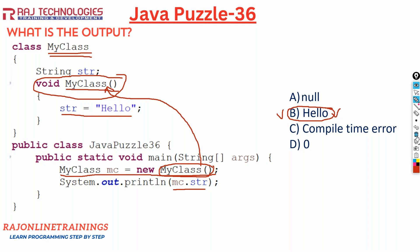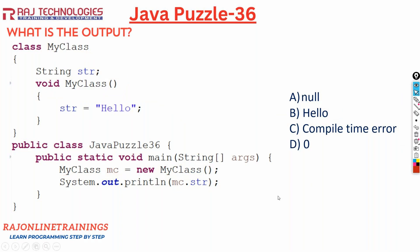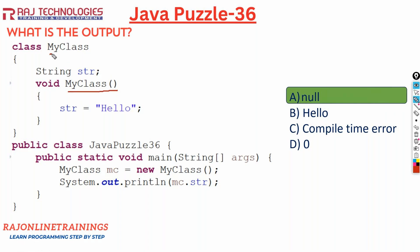But that is not the correct option. The correct answer is option A - null. The main concept is: a constructor is a method whose name is same as the class name, used to initialize the object, and does not return anything - not even void. But in this code, the method myClass has a return type void, so this is NOT a constructor.